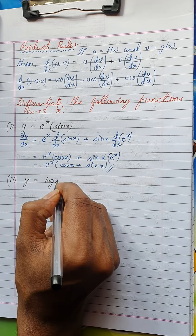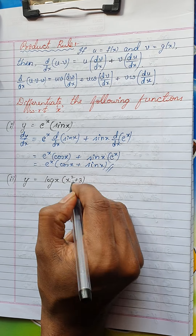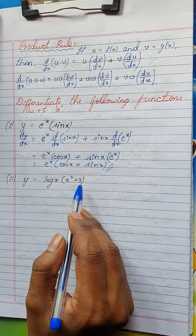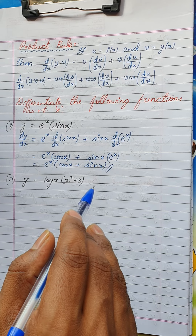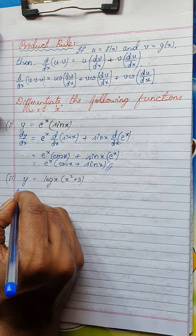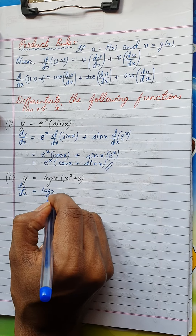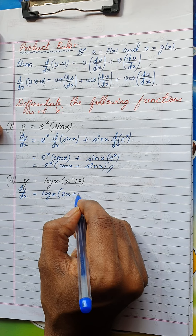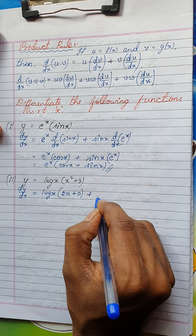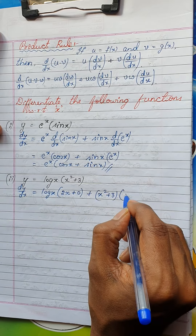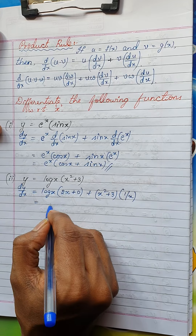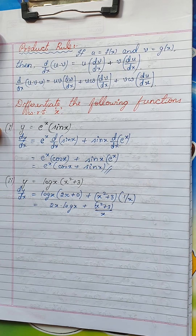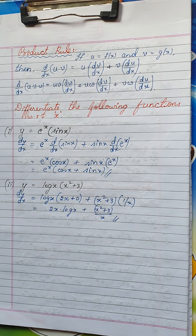Next, y = log x·(x²+3). I have two functions: log x and (x²+3). So dy/dx is: keep log x as it is and differentiate (x²+3), giving 2x + 0, plus keep (x²+3) as it is and differentiate log x, giving 1/x. This simplifies to 2x·log x + (x²+3)/x.